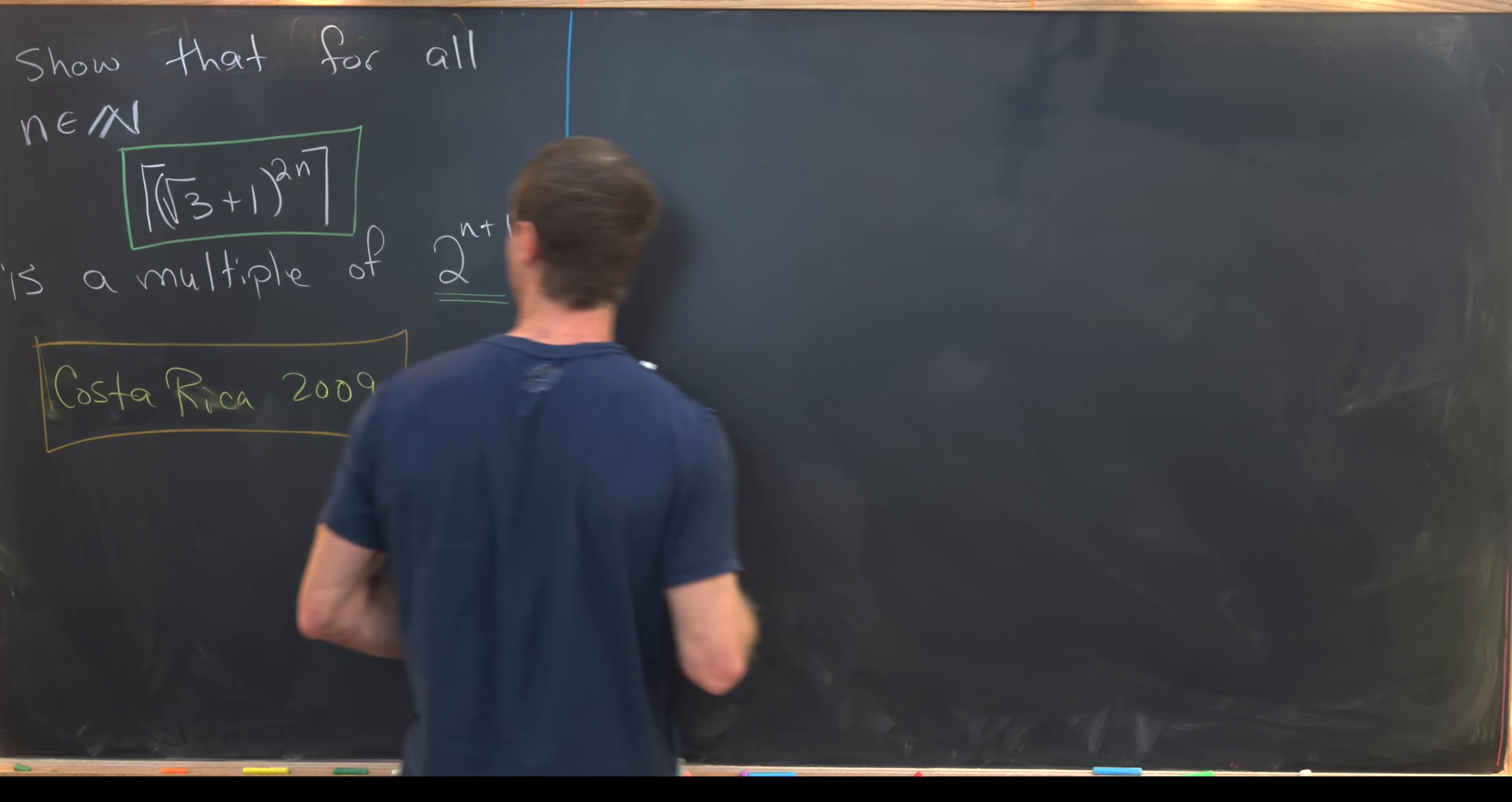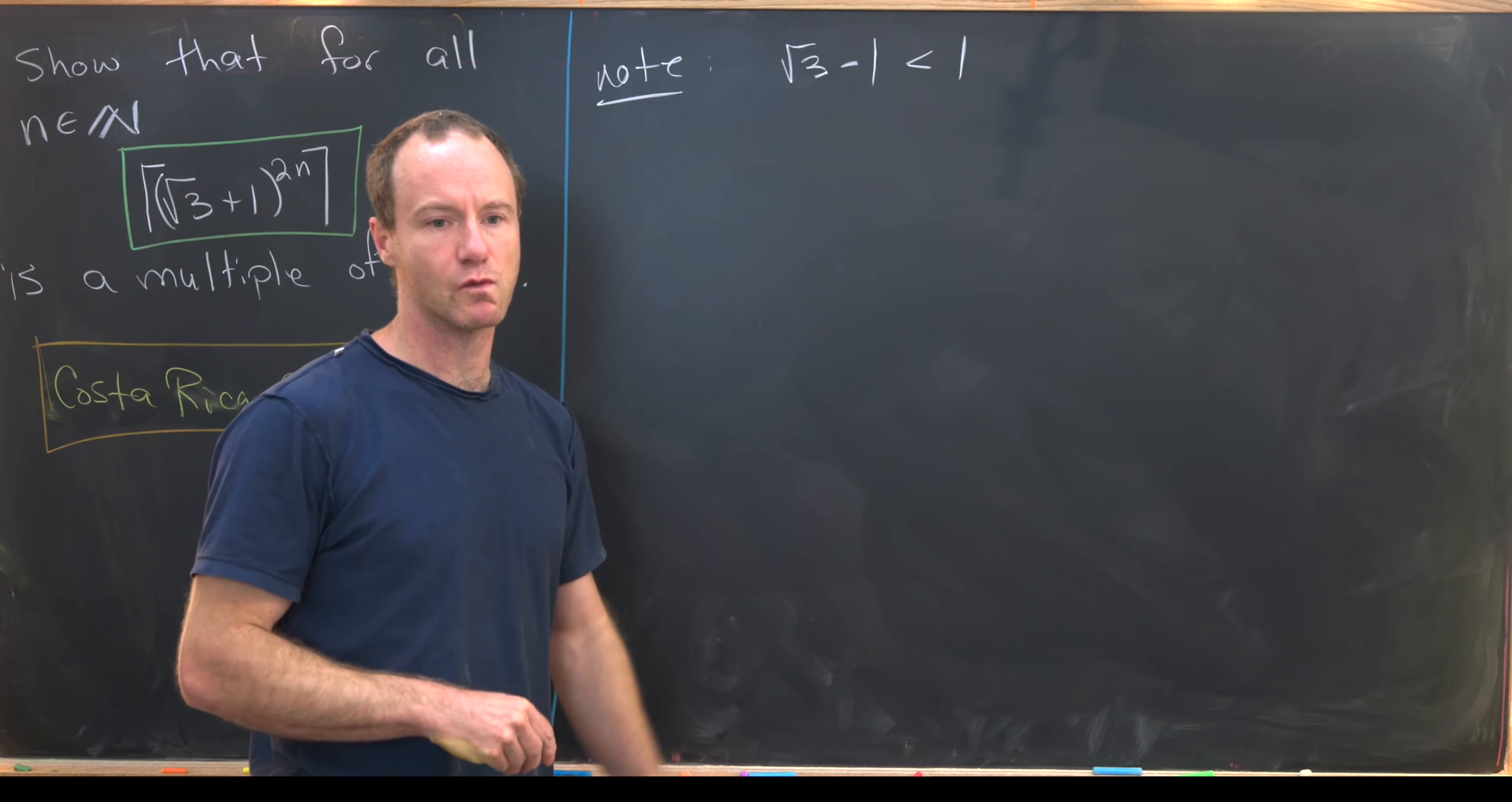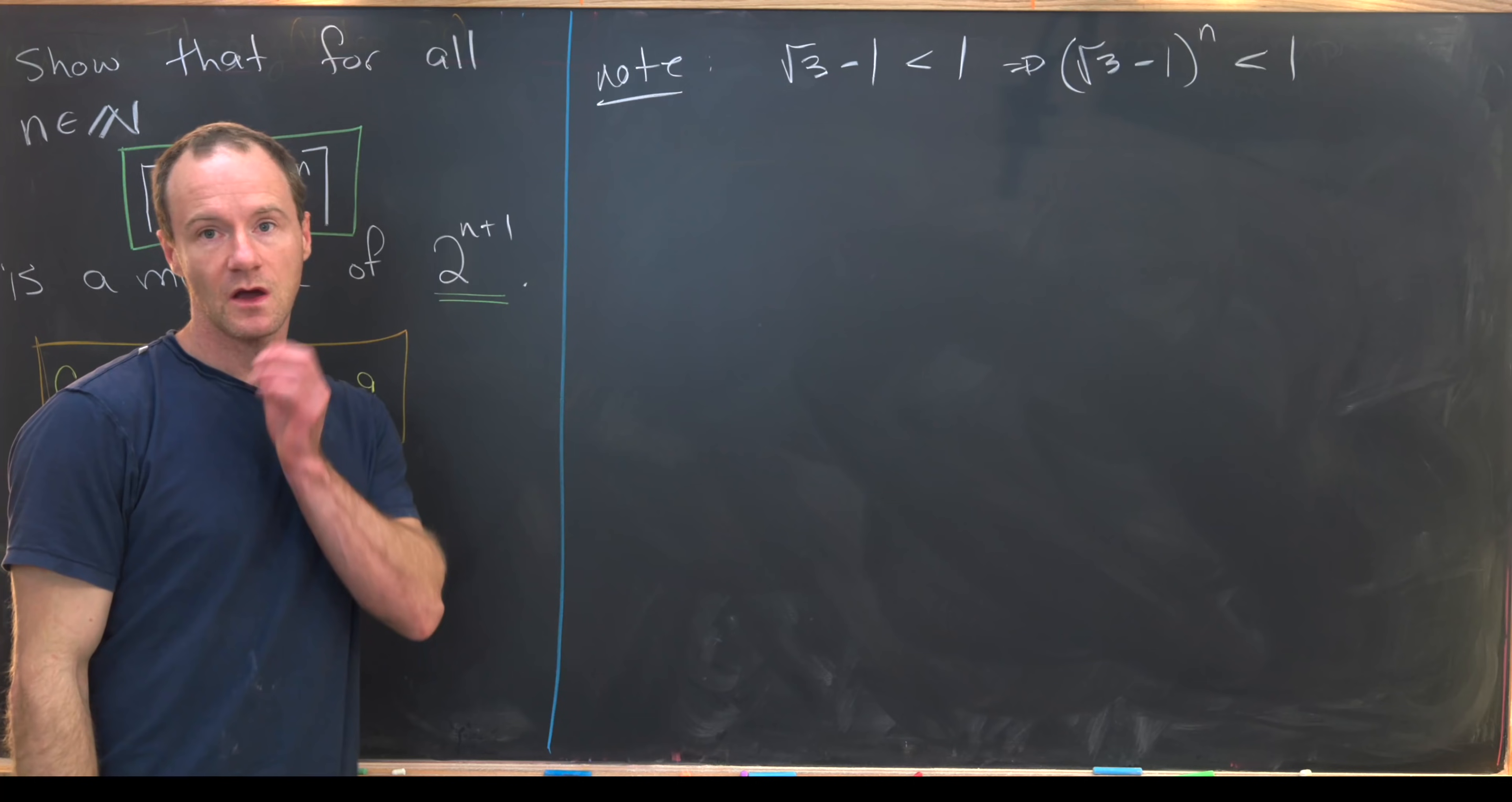So let's maybe first note that we have the following. Square root of 3 minus 1 is definitely less than 1. Well, that's clear because we've got the square root of 3 is between 1 and 2, but that means that for all n, the square root of 3 minus 1 to the n is also less than 1.